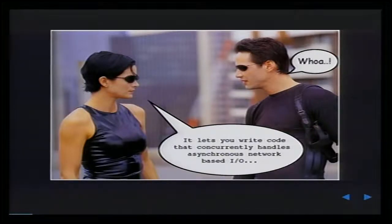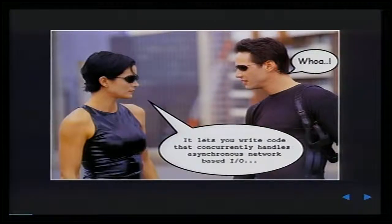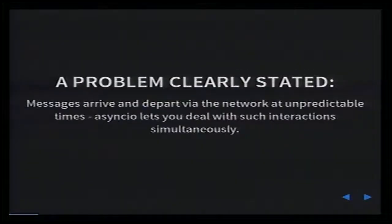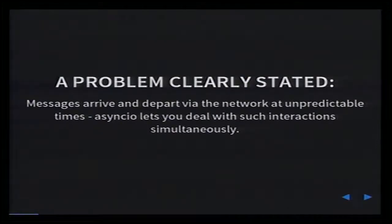Let's be clear about what I mean by those terms. Concurrency is when several things appear to happen at once. Asynchronous literally means not synchronized — there's no way to tell when something may happen. The network is a medium for communicating with another device, usually via the internet. And IO is input-output, when a program communicates with the outside world. So the problem clearly stated is that messages arrive and depart via the network at unpredictable times, and asyncIO lets you deal with such interactions simultaneously.